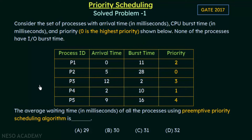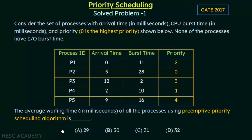Given this information, we are to calculate the average waiting time in milliseconds of all the processes using the preemptive priority scheduling algorithm. We are given four options: A) 29, B) 30, C) 31, and D) 32. The options are very similar to each other, so let's solve this correctly and find out the answer.